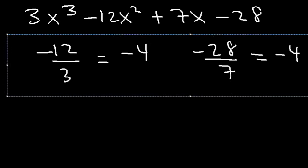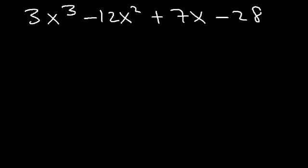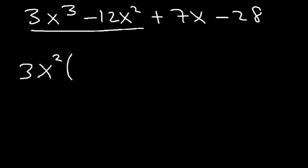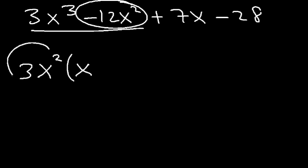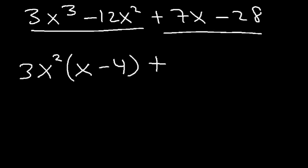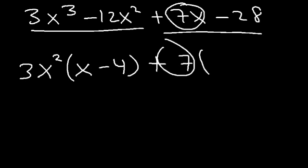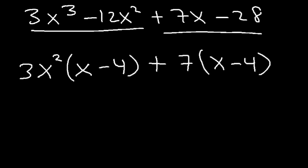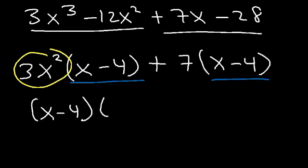The first two and last two coefficients have the same ratio, so we can factor by grouping. Take out the GCF from the first two terms — that's 3x squared: 3x cubed divided by 3x squared is x, and negative 12x squared divided by 3x squared is negative 4. From the last two terms, take out 7: 7x divided by 7 is x, and negative 28 divided by 7 is negative 4. We have common factor x minus 4, giving the final answer x minus 4 times 3x squared plus 7.